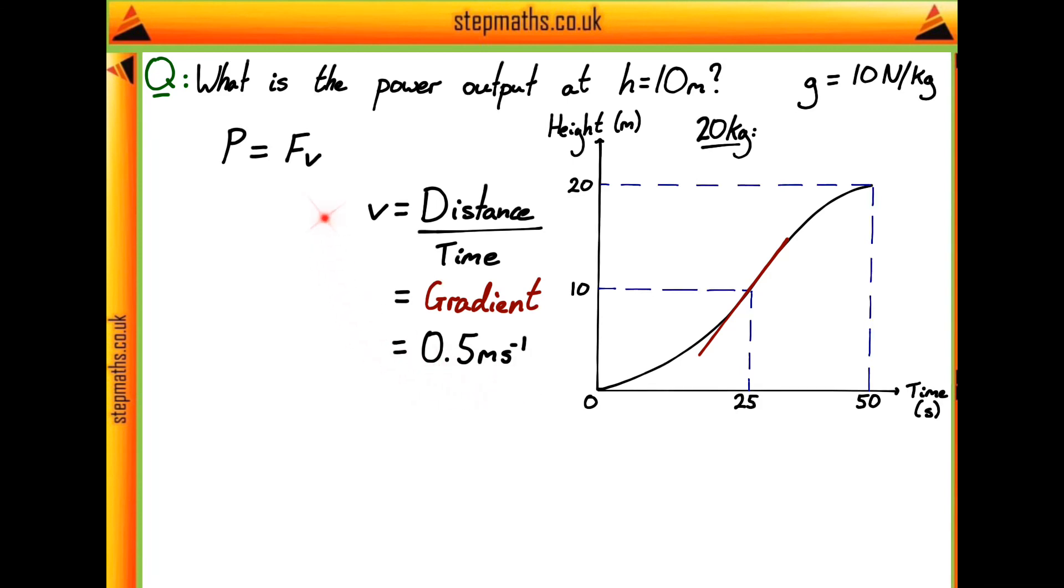Now that we've got the velocity sorted for our power equation, let's think about the force acting on our mass. To think about the force, let's draw a diagram of what's going on. We have our 20 kilogram mass moving at velocity v, specifically 0.5 meters per second at a height of 10 meters. We have the force pulling it upwards from the crane, which is the force F in our equation P equals FV, and in the downwards direction we have the weight of 20g.